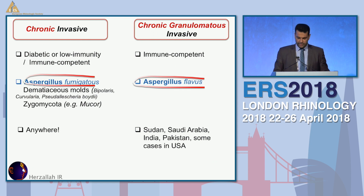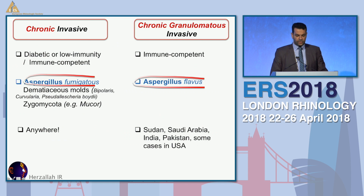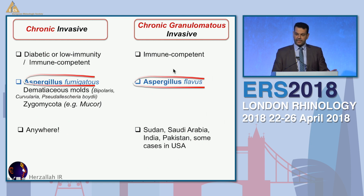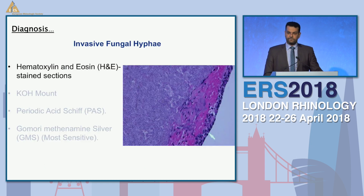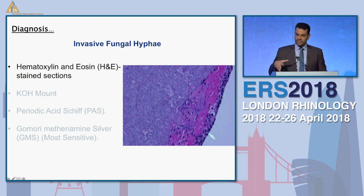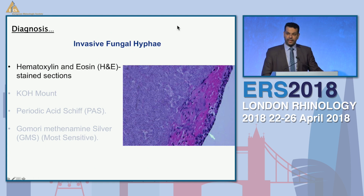It's just a chronic invasive process that can happen anywhere in the world, though most reports on chronic granulomatous invasive come from Sudan, Pakistan, and some areas in the USA. In both forms, you will find fungal hyphae getting into the tissues with angioinvasion, and you want to identify the fungal hyphae by different techniques.